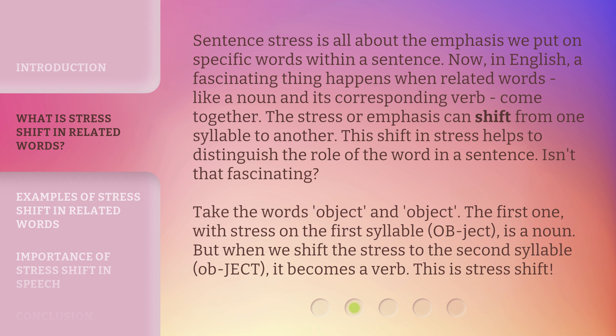Take the words 'object' and 'object.' The first one, with stress on the first syllable — OBject — is a noun. But when we shift the stress to the second syllable — obJECT — it becomes a verb. This is stress shift.